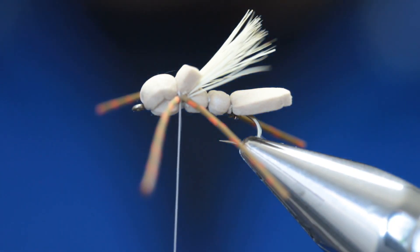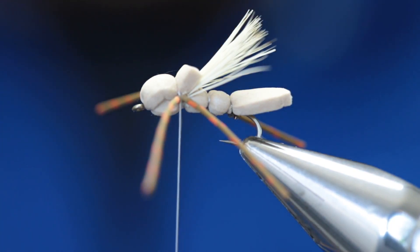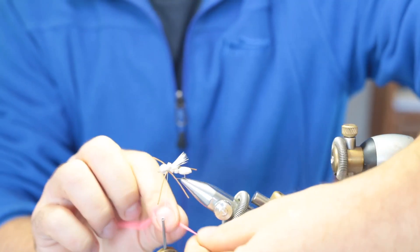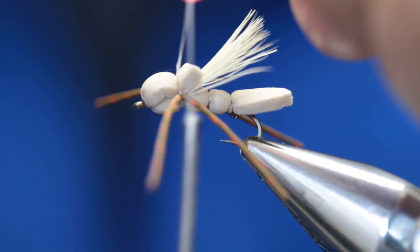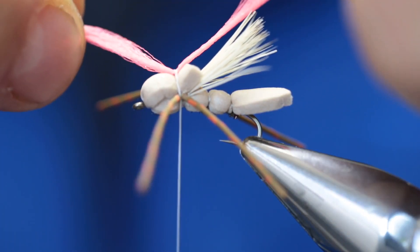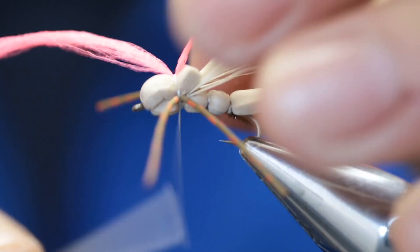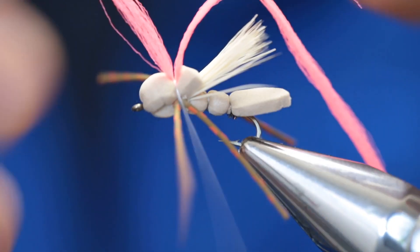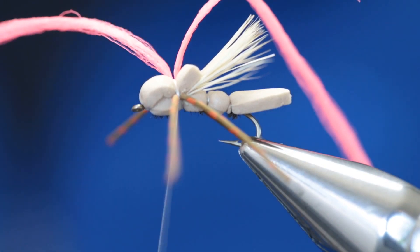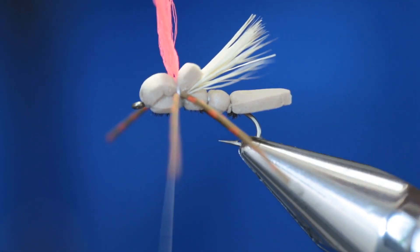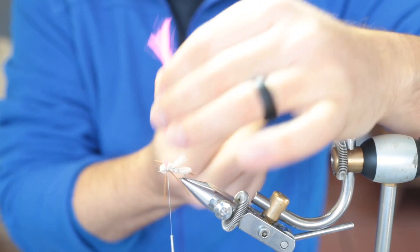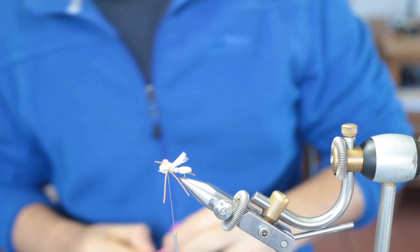The next step is to cut a section of antron yarn. I'm just going to put the midway section of the antron yarn right on top of the fly and give two or three proper wraps like so. Now pull the antron yarn up and with one clean cut, cut it off. Now there's your sighter.